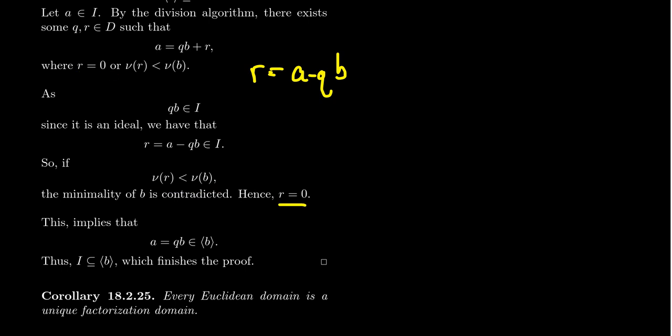Now if R equals zero that would mean that A equals QB which is an element of the principal ideal generated by B as we can see right here. And since A was an arbitrary element this would then show that I is contained as a subset inside the principal ideal thus giving us the equality we wanted.